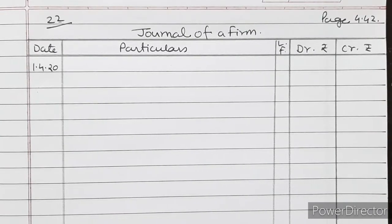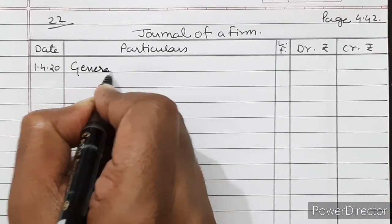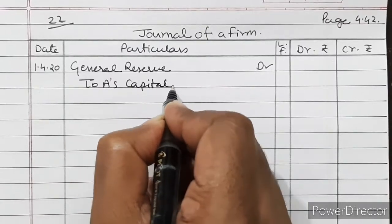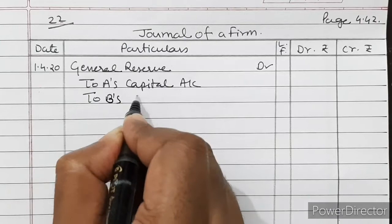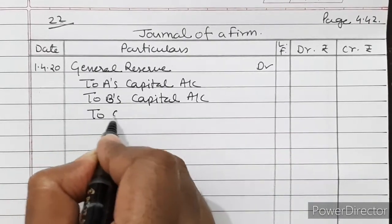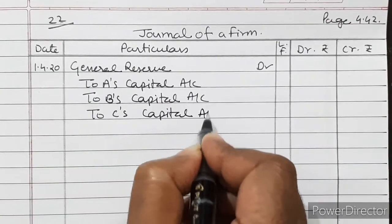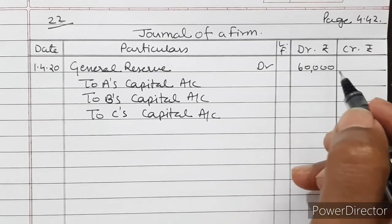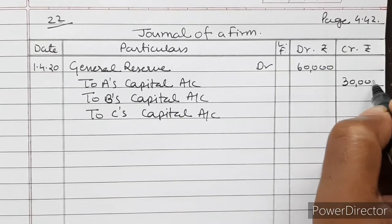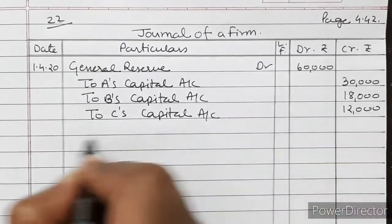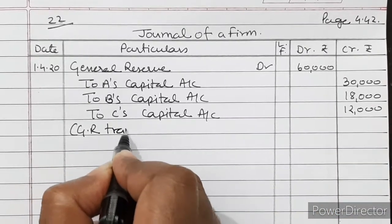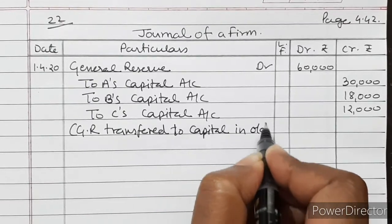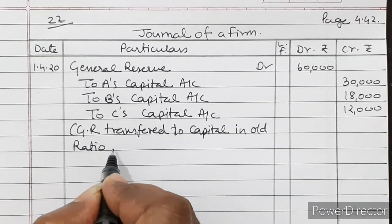Solution for Question 22. First, distribute general reserve to partners. General Reserve Account debited to A's Capital Account, B's Capital Account, and C's Capital Account. General reserve is Rs. 60,000 and old profit sharing ratio is 5:3:2, so A gets Rs. 30,000, B gets Rs. 18,000, and C gets Rs. 12,000. General reserve transferred to capital in old ratio of 5:3:2.